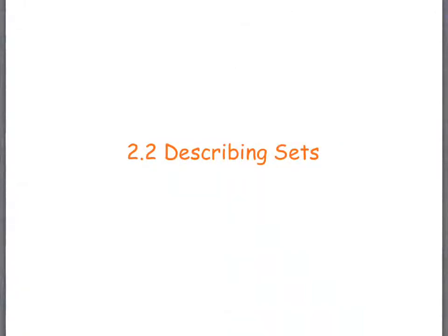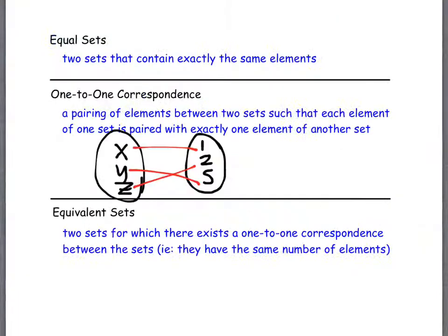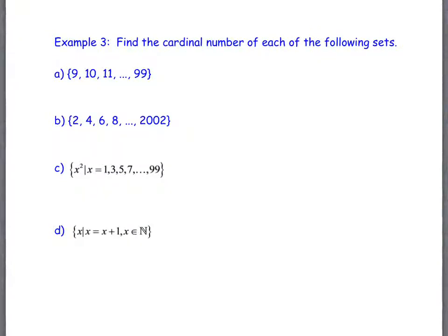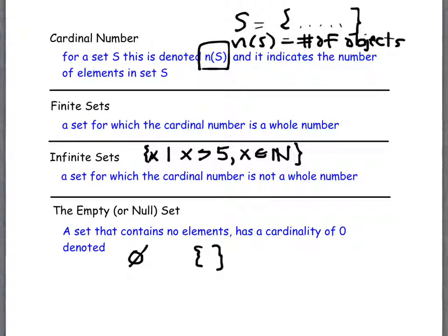All right, so last time we described sets, or at least we talked about how we described sets. One of the things that we had left off on was the idea of being able to count or give a countable number to how many items are in a set. And we called that cardinality, or the cardinal number of a set, counting how many items are in a set.